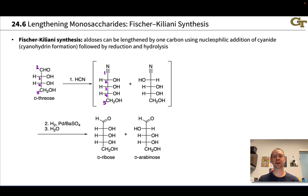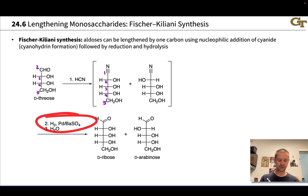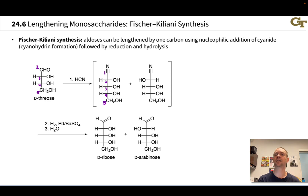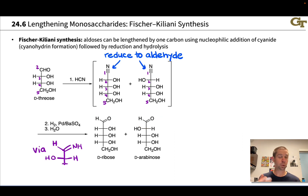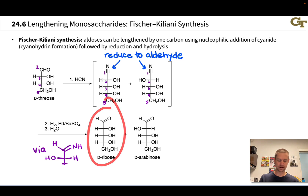Instead, we make use of a poisoned palladium catalyst — palladium and barium sulfate. This is reminiscent of the Lindlar hydrogenation of alkynes to cis-alkenes. This establishes an imine, which is then hydrolyzed to an aldehyde via the addition of water in the third step. The ultimate result is the conversion of that nitrile group into an aldehyde group. We end up with two epimers — in this particular case, starting with D-threose, we end up with the pentoses D-ribose and D-arabinose.